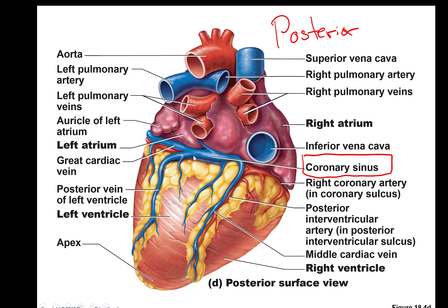The coronary sinus dumps the blood into the right atrium along with other deoxygenated blood returning to the right atrium. Then the right atrium is eventually going to send this blood to the right ventricle and then out through the pulmonary trunk to the lungs, where the blood is going to pick up oxygen and release carbon dioxide.